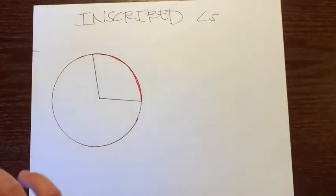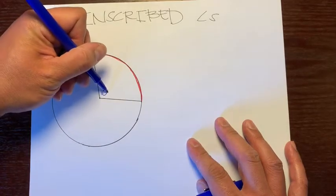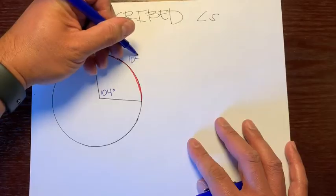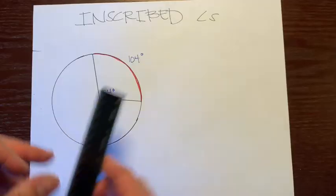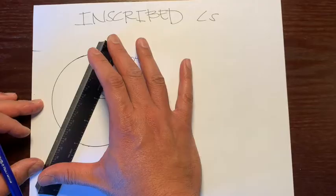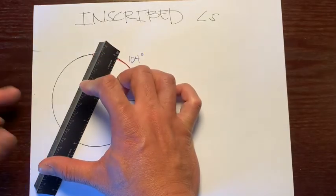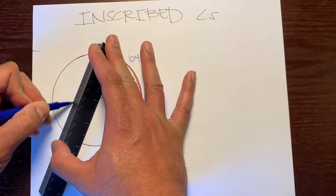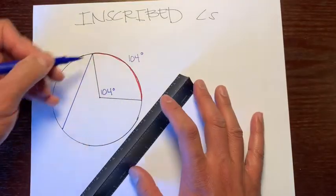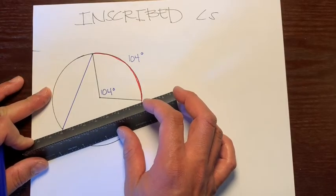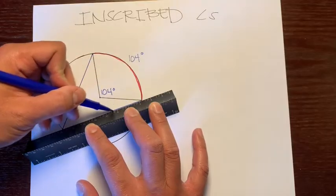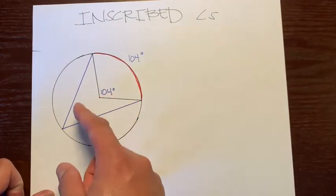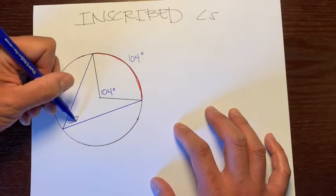For example, let's say the central angle is 104 degrees. That makes its intercepted arc — the arc that this central angle is eating — also 104 degrees. Now let's stretch out this central angle by drawing a chord: a line from one point of the circle to another. We draw from one end of the intercepted arc to another point on the circle, and then a second chord from the other end. This is a narrow version of the central angle — half the measure. So half of 104 degrees is 52 degrees.